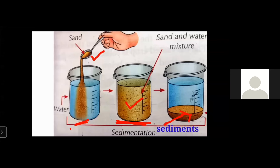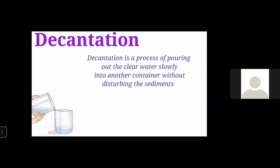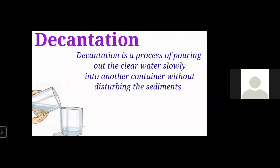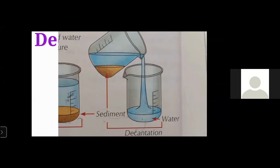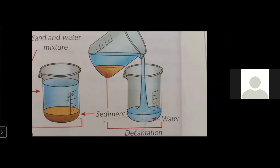The next method is decantation. Decantation is very simple. It is the process of pouring out the clear water slowly into another container without disturbing the sediment. So we saw the mixture in the third beaker. We are pouring out the clear water into another beaker without disturbing the sediment. This is called decantation. So we got sand separately and water also in a separate beaker — we separated the mixture.